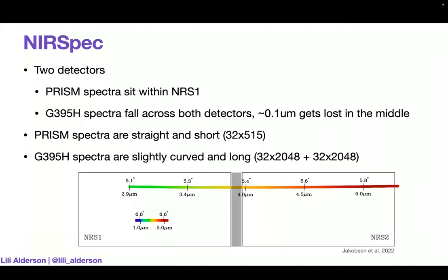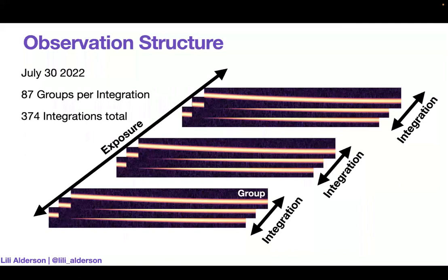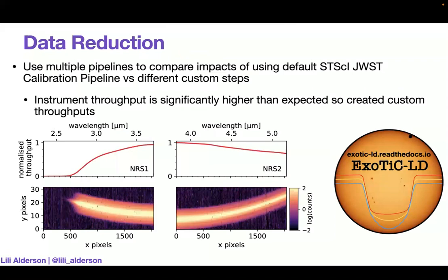The reason this is happening is because the PRISM spectra are nice and short. That's low resolution. Whereas the G395H spectra, they're high resolution, so they're much longer. And the traces are also slightly curved, which is another thing we have to think about dealing with. JWST observations, if you're not familiar, have a slightly strange structure, which can be a little confusing if you've never used them before. One observation is typically known as an exposure. Then each time series data point is an integration. So if you have 100 integrations, that's 100 data points on your light curve. And then within each integration, we have multiple groups, which are consecutive non-destructive reads of the detector. The transit happened on the 30th of July last summer, and we had 87 groups per integration and 374 integrations in total. So that's 374 points on our light curve.